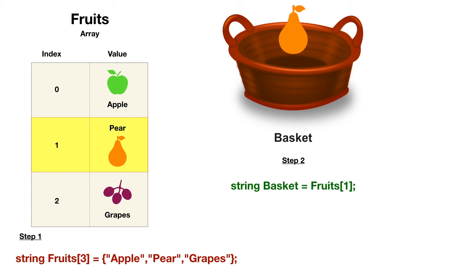I'm going to create a basket where I am going to create a string variable. That is the first position — that is the index. String basket equals fruits. That is what I call my array name, and that is what I call my index position.